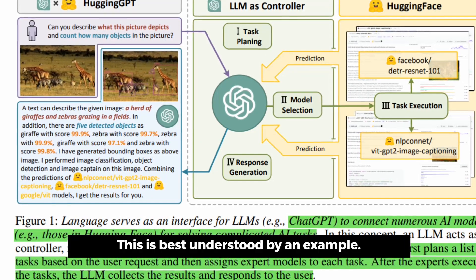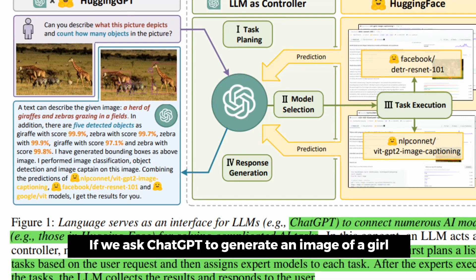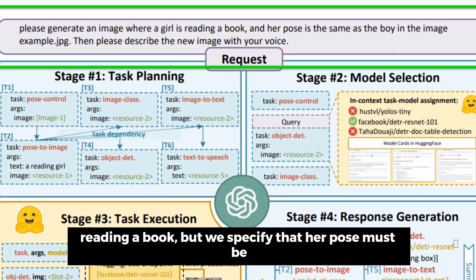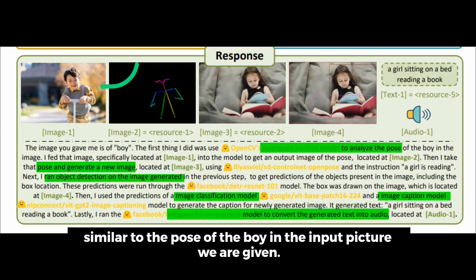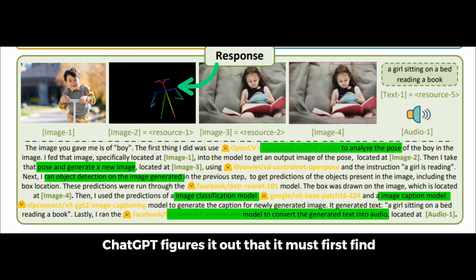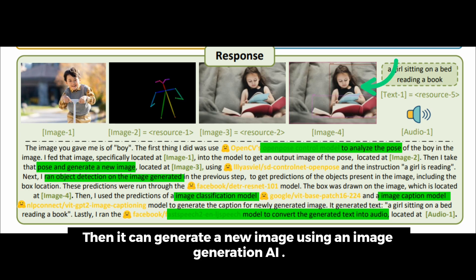This is best understood by an example. Here we ask ChatGPT to generate an image of a girl reading a book, but we specify that her pose must be similar to the pose of the boy in the input picture we are giving. ChatGPT figures out that it must first find the pose of the boy using a pose detection AI, and then it can generate a new image using an image generation AI.